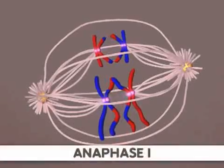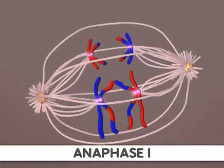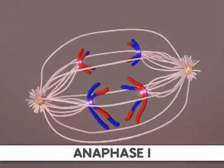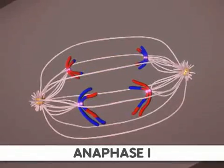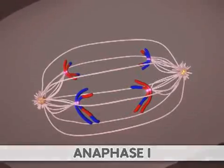The next phase is anaphase I. During this phase, homologous chromosomes separate and migrate to the two poles of the cell. Importantly, the sister chromatids remain attached at their centromeres.